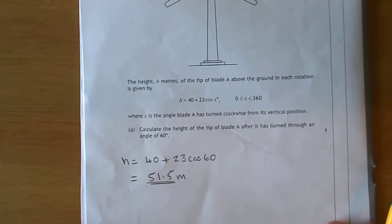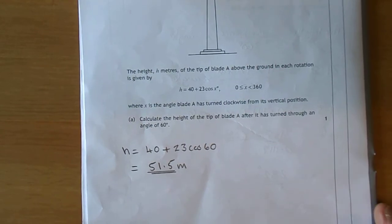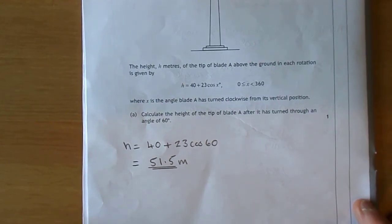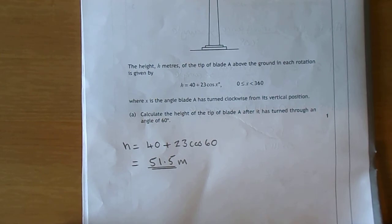Part A: Calculate the height when the angle is 60 degrees. Replace x with 60: 40 plus 23cos(60), and you get 51.5 meters. Straightforward use of calculator - make sure your calculator is on degree mode.